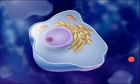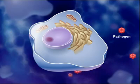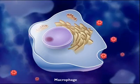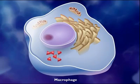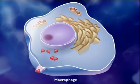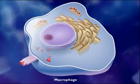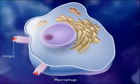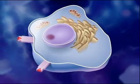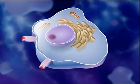Activation of the immune response typically begins when a pathogen enters the body. Macrophages that encounter the pathogen ingest, process, and display the antigen fragments on their cell surfaces. Macrophages with antigen fragments displayed on their surfaces are called antigen-presenting cells.